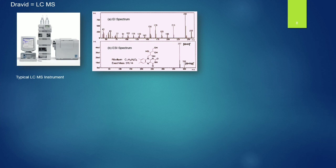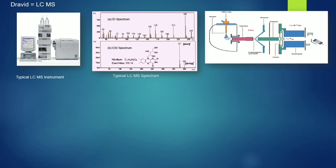But in an ESI spectrum it's a gentle technique — it's a gentle push, and most of the time you will get M+H, the molecular ion. So then it is very easy to interpret.